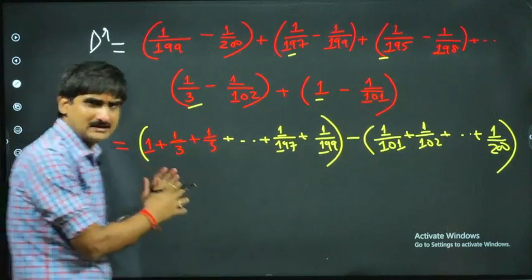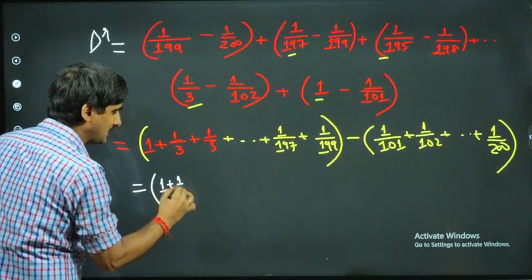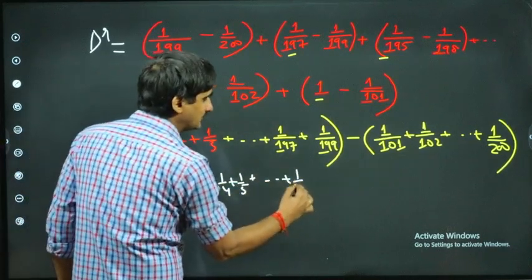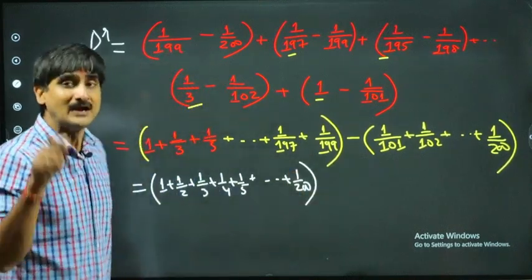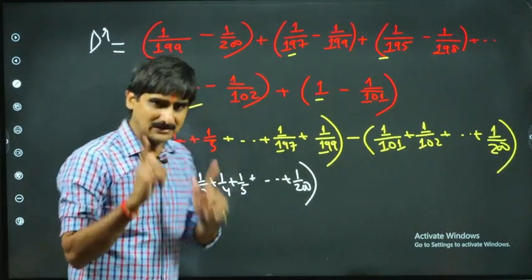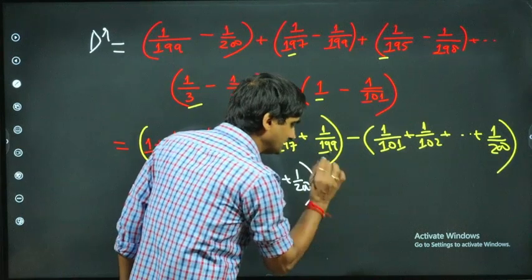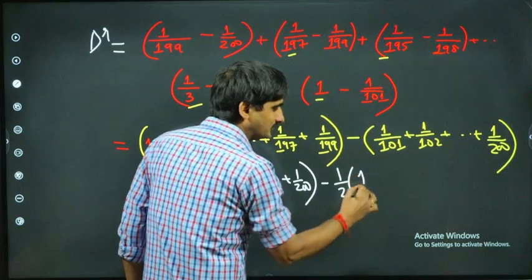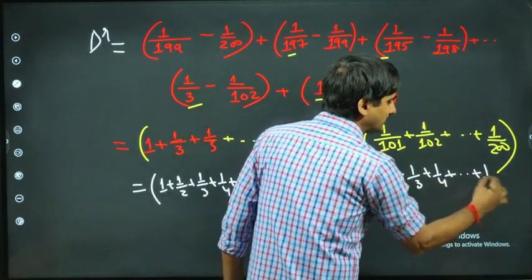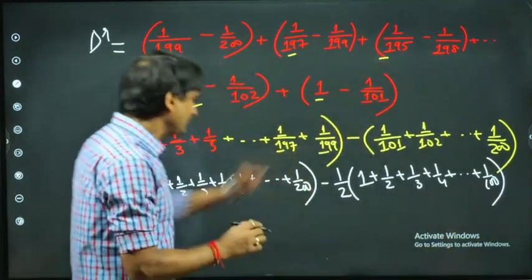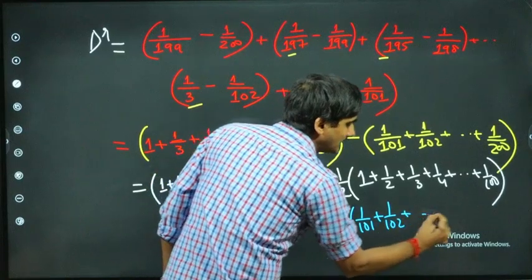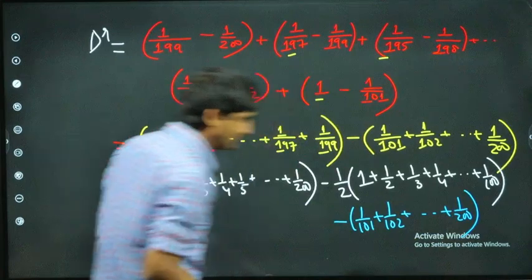I add 1 + 1/2 + 1/3 + 1/4 + 1/5 + ... + 1/200 — which adds the even-denominator terms (1/2, 1/4, 1/6, ...) that were missing. Then I subtract them by taking 1/2 common: −(1/2)(1 + 1/2 + 1/3 + ... + 1/100). There's also the term −(1/101 + 1/102 + ... + 1/200).